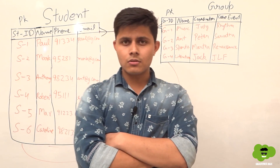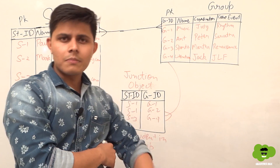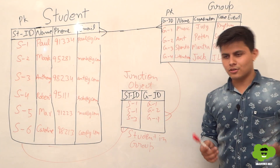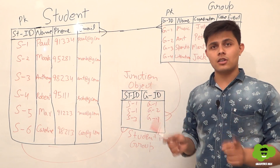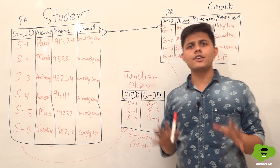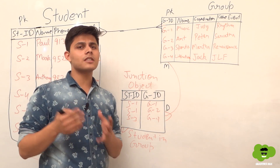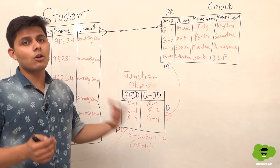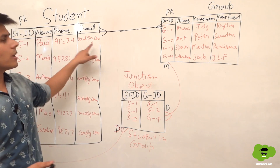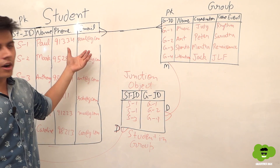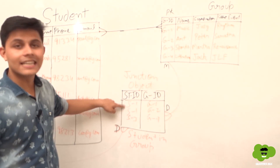Now, should these relationship fields be lookup or master detail? These relationship fields will be master detail. In a master detail relationship, whenever you delete the one-side object's record, the associated child object's records also get deleted. So if we delete the S1 student record, both associated junction records will also get deleted.